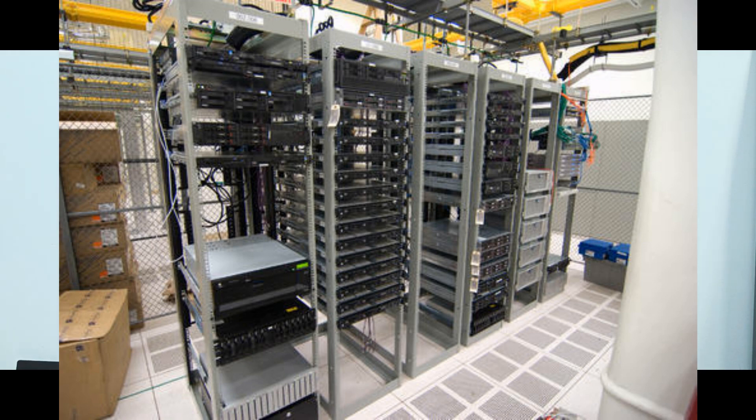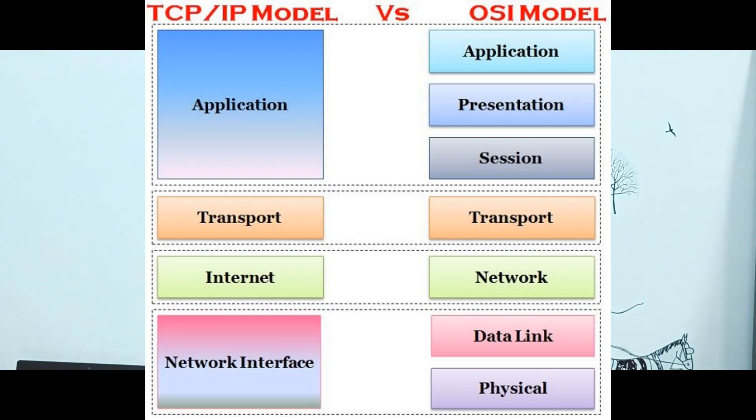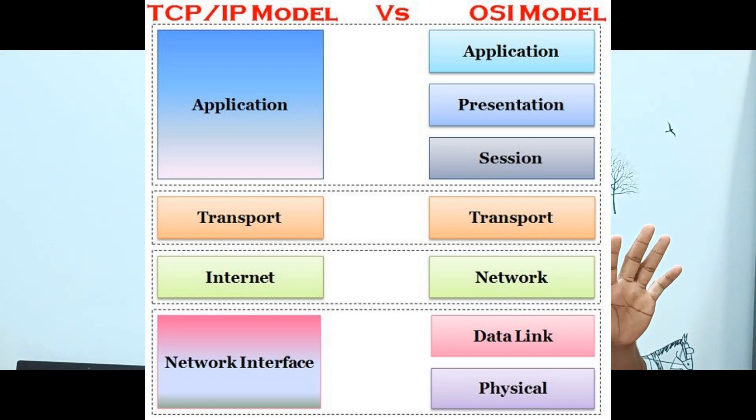In the networking domain we are providing internet services. Every company — IT companies, government sector companies, central government, state government, government hospitals, banking sector — each and every one is using the internet now. We have already covered the OSI Reference Model and TCP/IP Reference Model. There are layers: physical layer, data link layer, and network layer, and we have hardware components in these 3 layers.